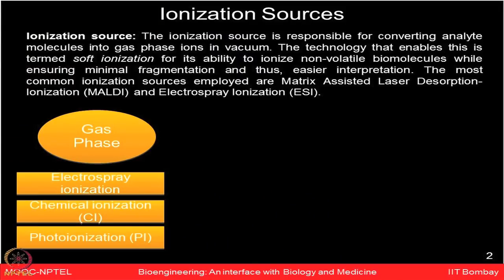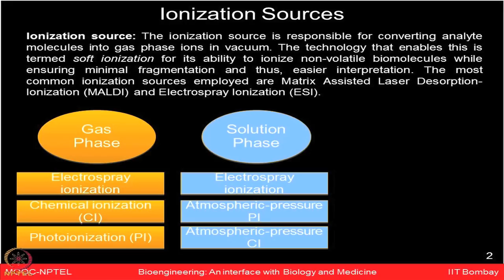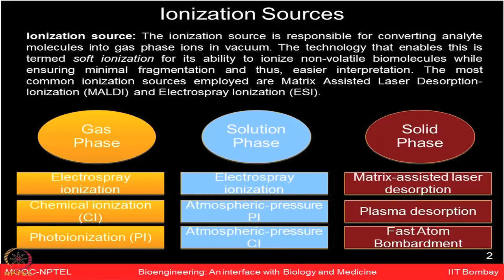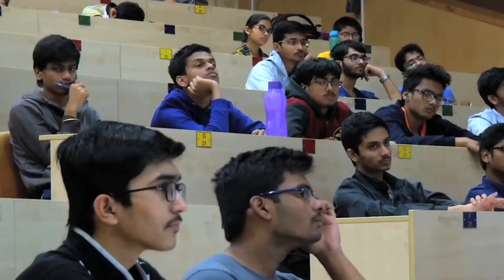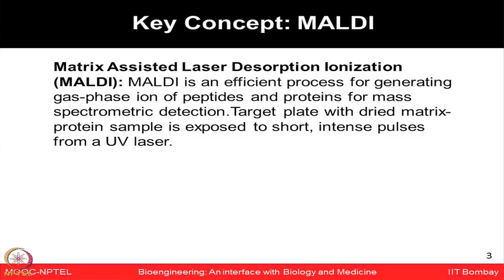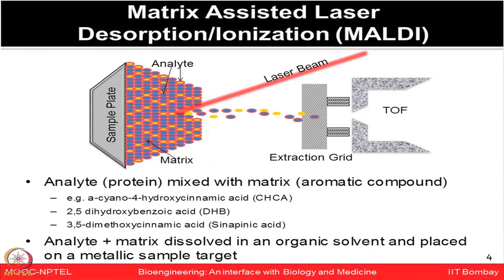Let us start with the first component of the mass spectrometer: the ionization source. Soft ionization is known for its ability to ionize non-volatile biomolecules while ensuring minimal fragmentation, making the data easy to interpret. The most commonly used ionization methods include electrospray ionization (ESI) and matrix-assisted laser desorption ionization (MALDI). MALDI is one of the efficient processes for generating gas-phase ions of peptides and proteins for mass spectrometry detection. In this method, a target plate holds a dried matrix and protein sample which is exposed to a short intense pulse of laser light, generating ionized forms of these peptides for analysis.